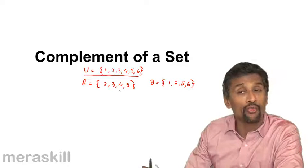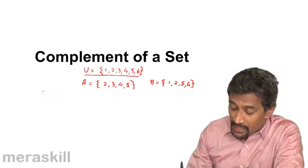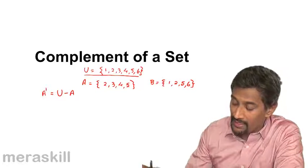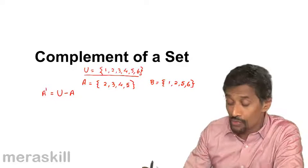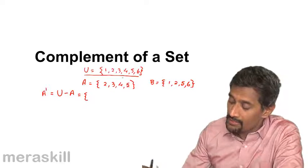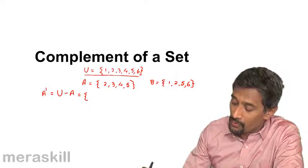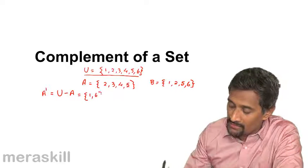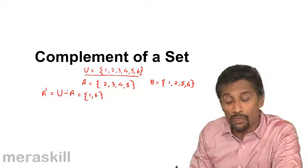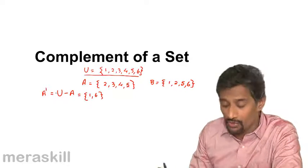So that is why we take U as the universal set. Now the complement of A is given by U minus A. That means all the elements in U which are not present in A. So the complement of A is going to be not 2, 3, 4 and 5 but 1 and 6. So complement of A means all the elements which are not present in A but present in the universal set.